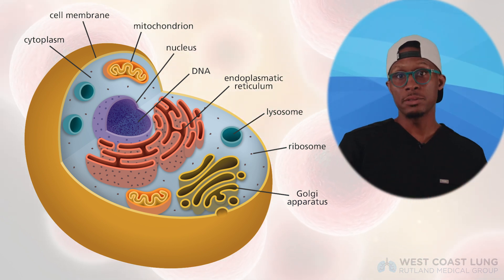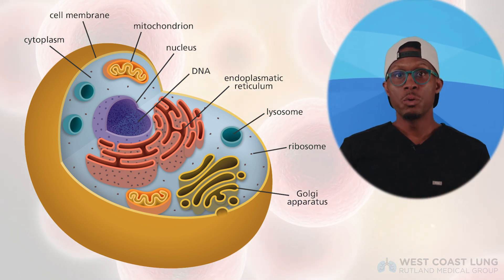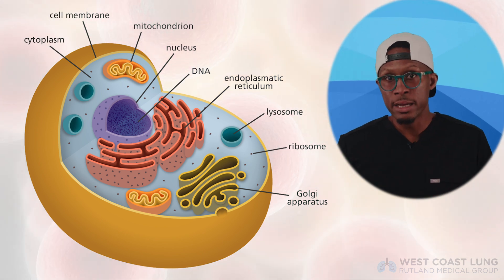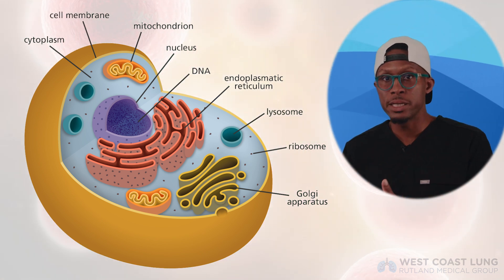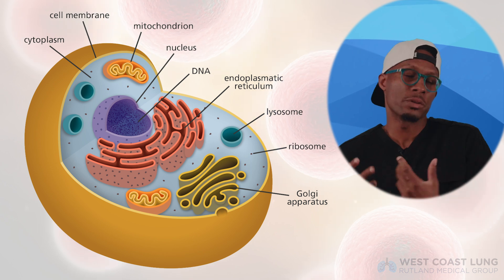The nucleus of the cell houses the DNA, which is our blueprint for everything. DNA has the instructions to make proteins and other molecules necessary for our cell survival. Throughout the body there are different organs and structures, and cells are tailored to function within their certain environment. Muscle cells look different than liver cells, but the organelles are the same and doing the same thing in each individual cell.